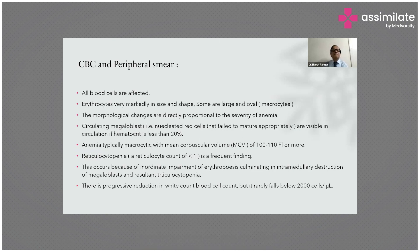In the complete blood count and peripheral picture in megaloblastic anemia, all blood cells are affected. Erythrocytes vary markedly in size and shape, and some are large and oval — macro-ovalocytes. The morphological changes are directly proportional to the severity of anemia. Circulating megaloblasts, which are nucleated red cells that fail to mature appropriately, are visible in circulation if hematocrit is less than 20%. Anemia is typically macrocytic.